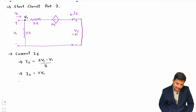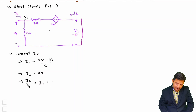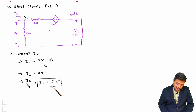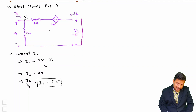So y21 = i2/v1 = 2 mho. This is also referred to as the forward transfer admittance in Y parameters.